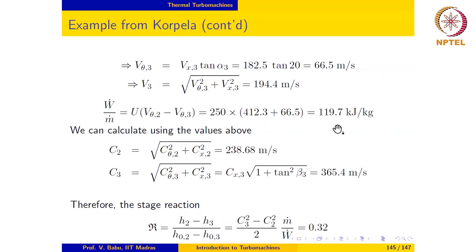The specific work may be evaluated from Euler turbine equation like this: u times v-theta. In this case, v-theta-2, which is this, is pointing in this direction, and v-theta-3, which is this, is pointing in the opposite direction. That means there is going to be a change in sign here. So the specific work then comes out to be 119.7 kilojoules per kilogram.